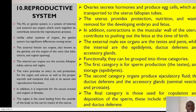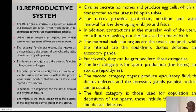The tenth system is the reproductive system, also referred to as the genital system. This is the only system that is different in both sexes. The external female sex organs are known as the genitals — organs of the vulva — which include the labia, clitoris and vaginal opening. The internal sex organs for females include the ovaries, fallopian tube, uterus and the vagina. The vulva provides an entry to and protection for the vagina and uterus, as well as proper warmth and moisture which aids in sexual and reproductive function.